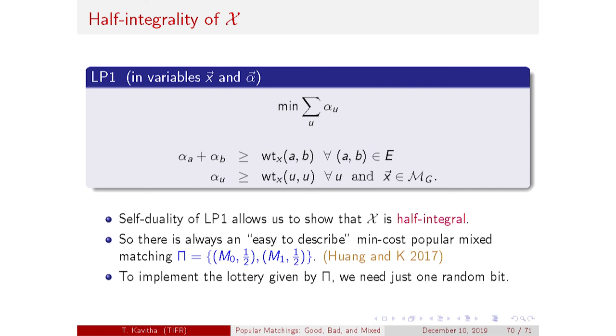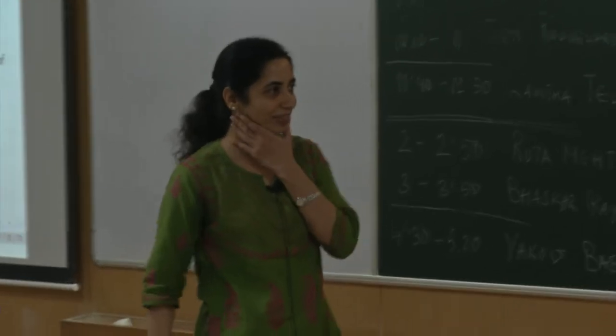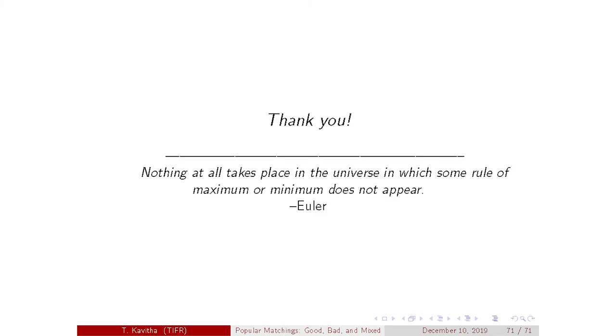Given that finding a best popular matching is hard, it is very nice to know that by generalizing to popular mixed matchings, we have tractability and a nice structure on the optimal popular mixed matching. Since the whole talk was on max size and min cost popular matchings, I end with a quote from Euler.